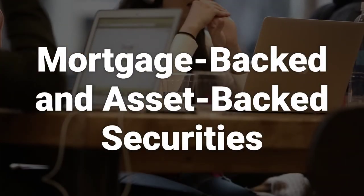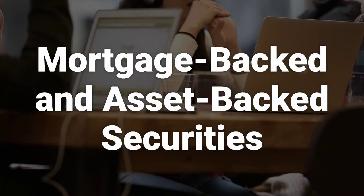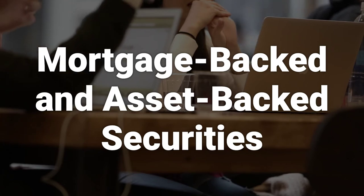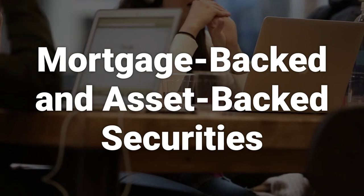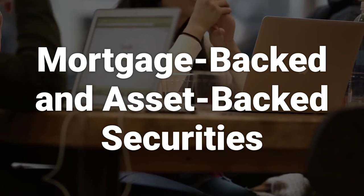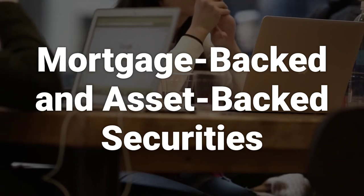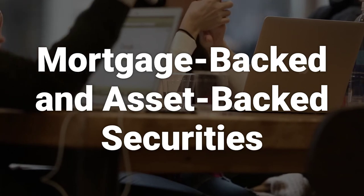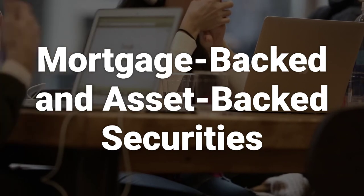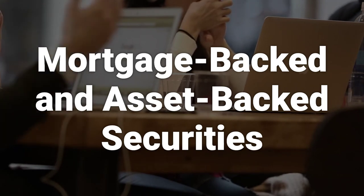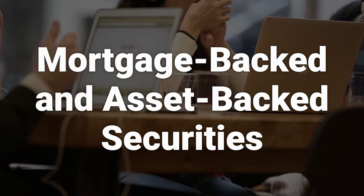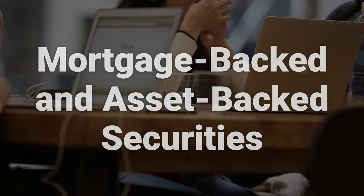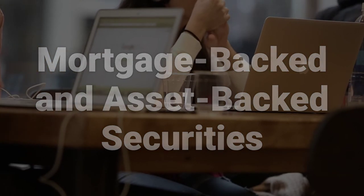In the case of an MBS or ABS, the average life represents the average length of time required for the associated borrowers to repay the loan debt. The risk associated with an MBS or ABS centers on whether the borrower associated with the loan will default. If the borrower fails to make a payment, the investors associated with the security will experience losses.